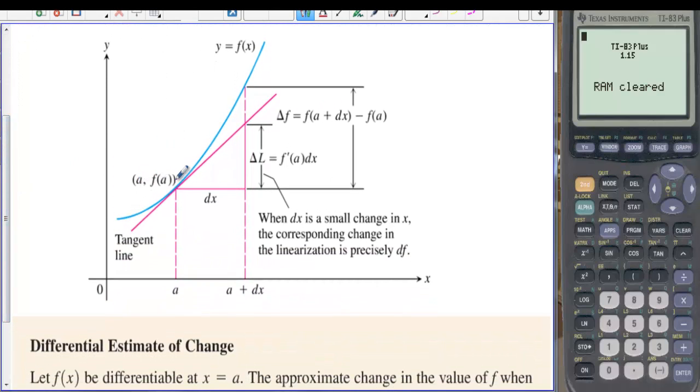Well here we have A, f of A. We have the point of tangency, and we have this tangent line to f of x. Now if we have this small change in x, then we're going to have this change overall in y. When dx is a small change in x, the corresponding change in the linearization is precisely the derivative of f.